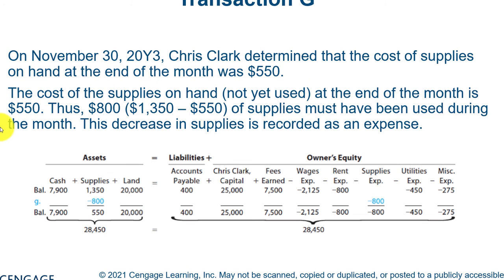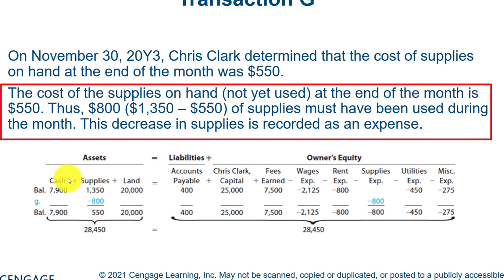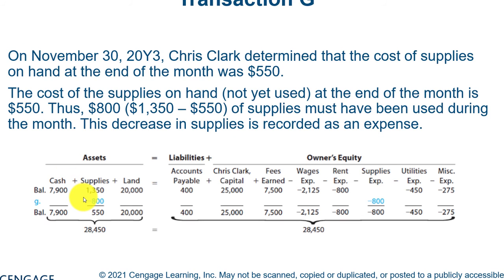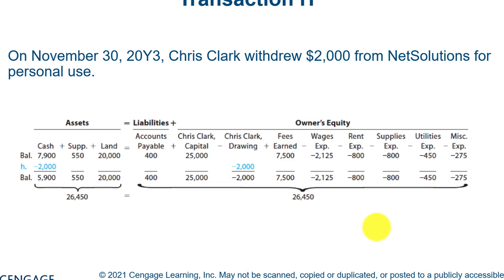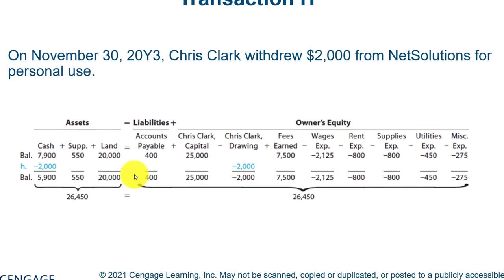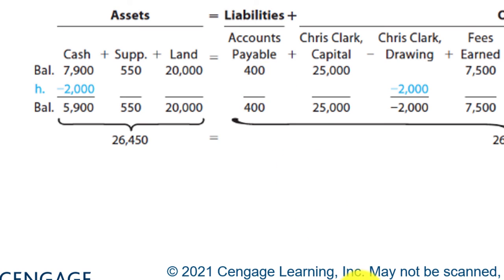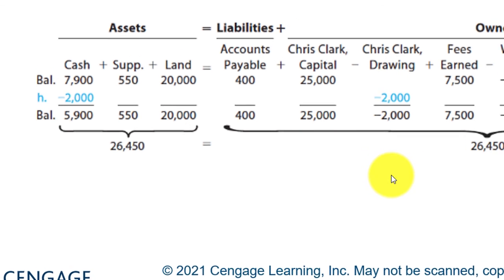So we must have used up $800 worth of supplies. We have to write it down — subtract $800 from supplies — because failing to do so would be very misleading. The equation must balance, so we record a supplies expense. Finally, Chris Clark is going to take out $2,000 from the company for his personal use. Cash of the company goes down $2,000 and equity goes down $2,000. This is very similar to paying a dividend.